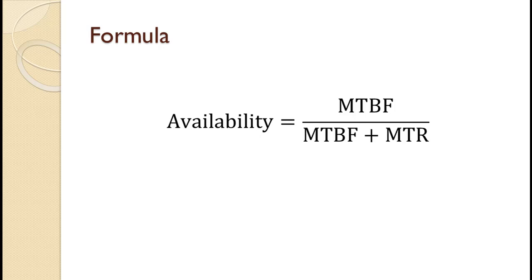Availability is calculated as mean time between failure or MTBF divided by the sum of the mean time between failure and mean time to repair or MTR.